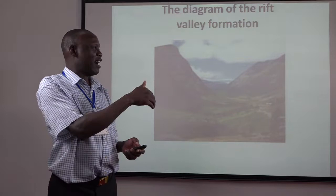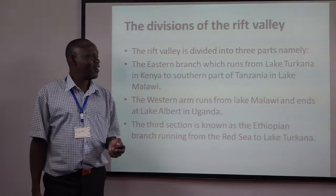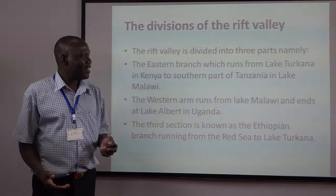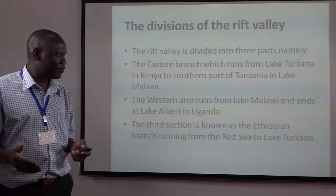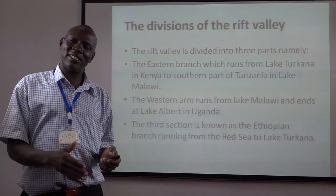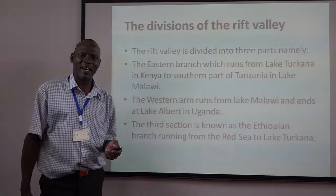The rift valley is divided into three parts. Namely, the eastern branch from Lake Turkana in Kenya up to Lake Malawi; then you have the western branch, which runs from Lake Malawi along the western boundaries up to Uganda, where Lake Albert is; and then we have the Ethiopian rift valley, which connects from the Red Sea and ends at Lake Turkana.